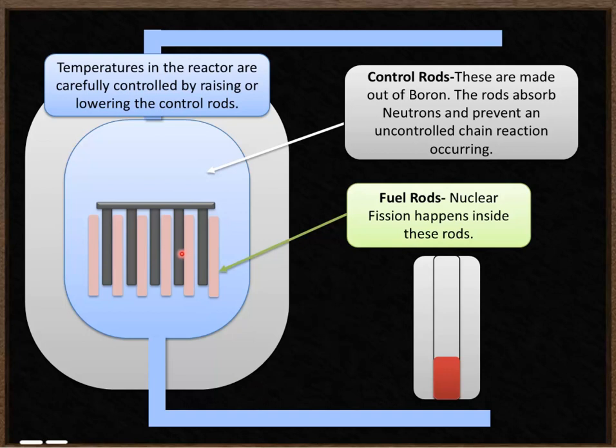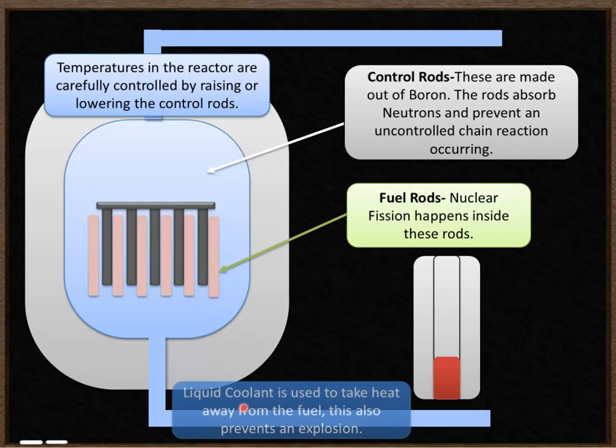As well as the control rods there is also a liquid coolant which circulates through the reactor core. What the liquid coolant does is it takes away heat energy from the fuel rods. So it passes over the fuel rods and heat energy is transferred from the fuel rod to the coolant.